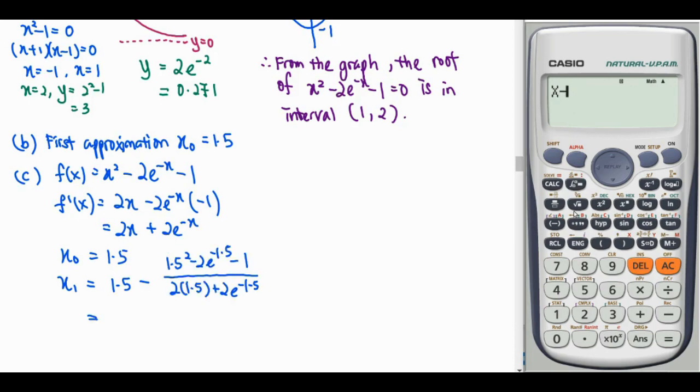Do our calculation using calculator. So write the formula for x minus the function over the first derivative function. Then 2x plus 2 exponential negative alpha x. Then we press calculate for the first initial value, 1.5.